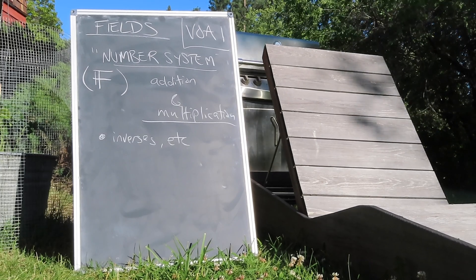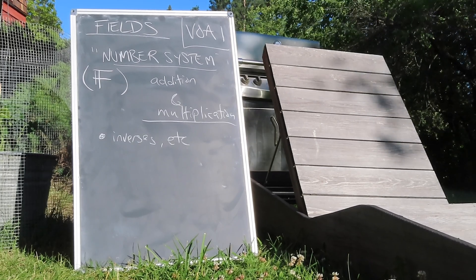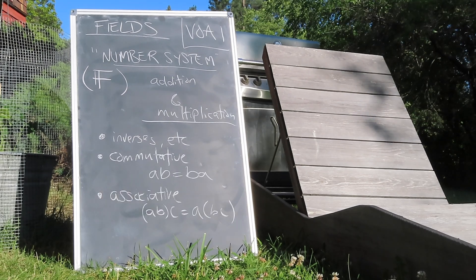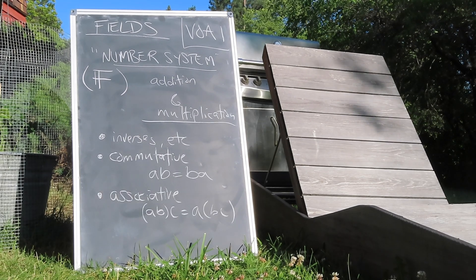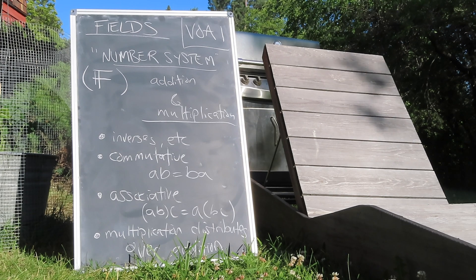Besides having inverses and unit elements, these operations both satisfy the commutative and associative laws. Additionally, multiplication distributes through addition.